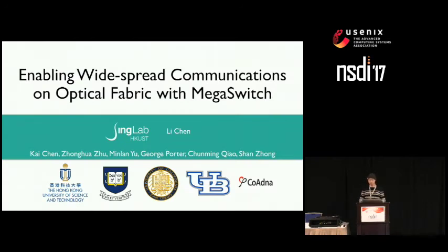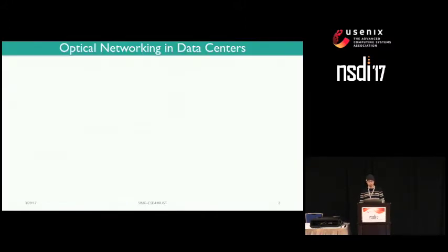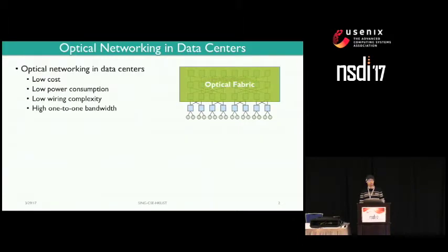Thank you for the introduction. Today I'm going to present a novel optical architecture that supports widespread high-bandwidth traffic in data center networks. This is joint work from both academia and industry, from both Hong Kong and the US. The port count of data center fabric is growing quickly with multiple layers of electrical switching added on top, and it has become quite costly to scale further. There has been continuous efforts in using optical networking in data centers because of its low cost, low power consumption at high link speeds, and low wiring complexity.